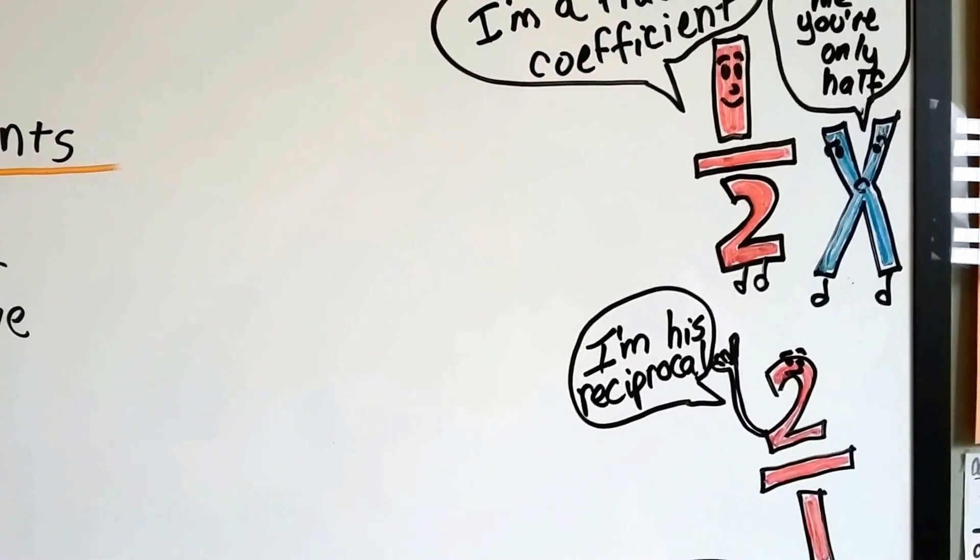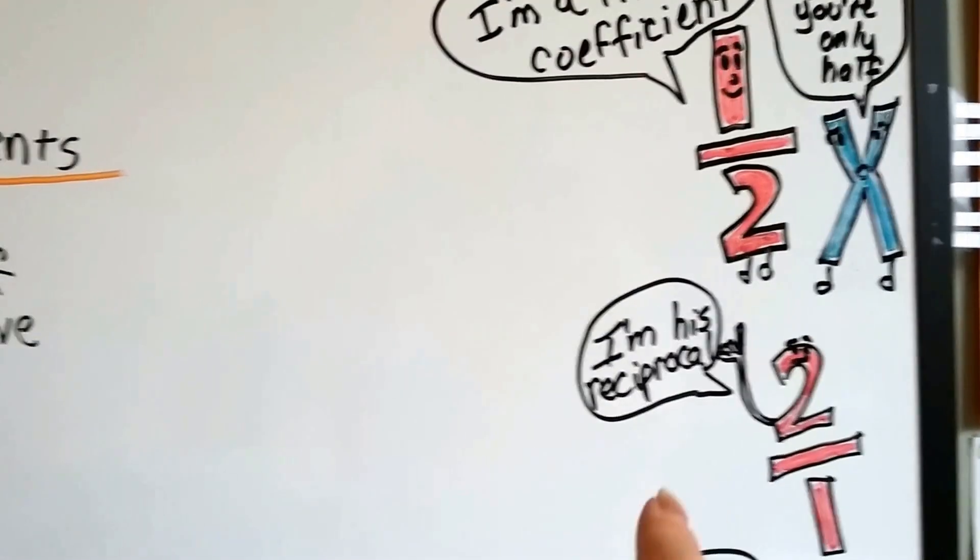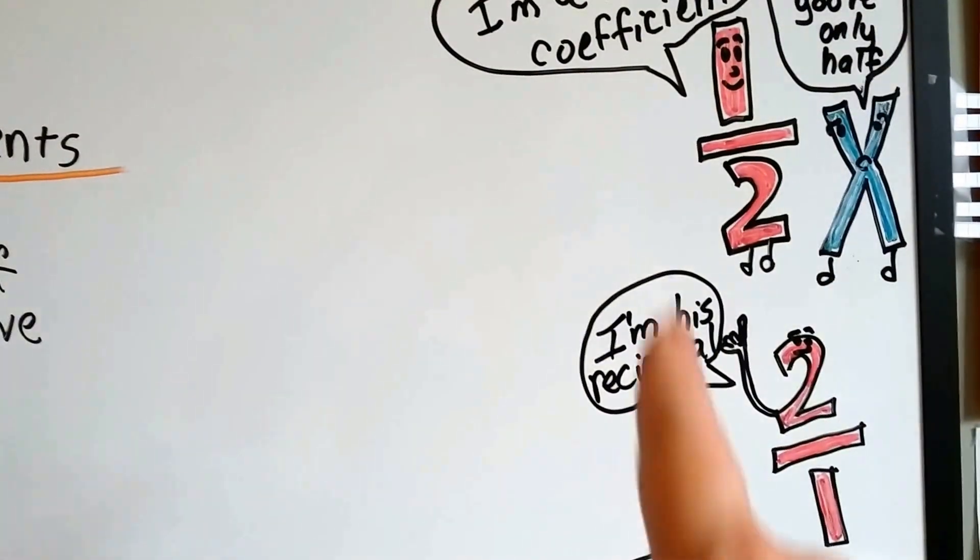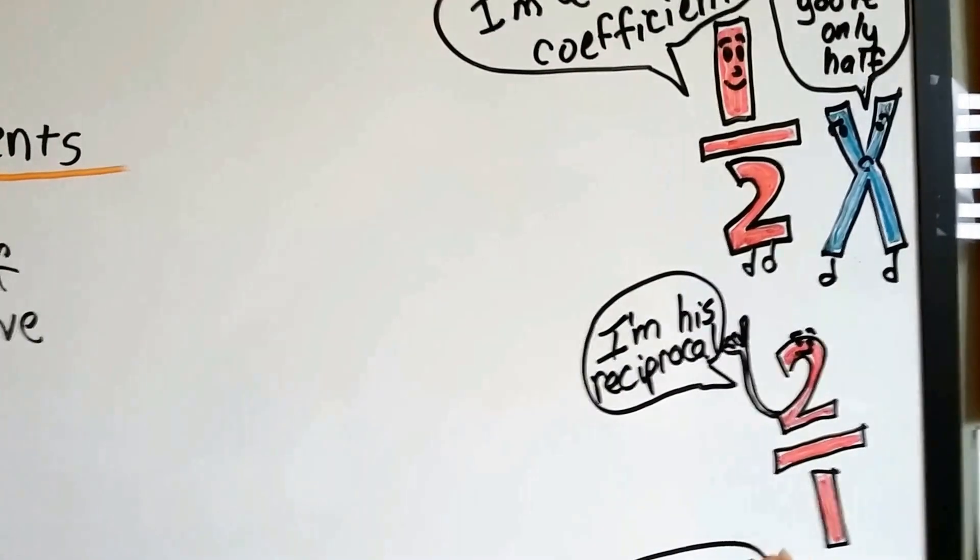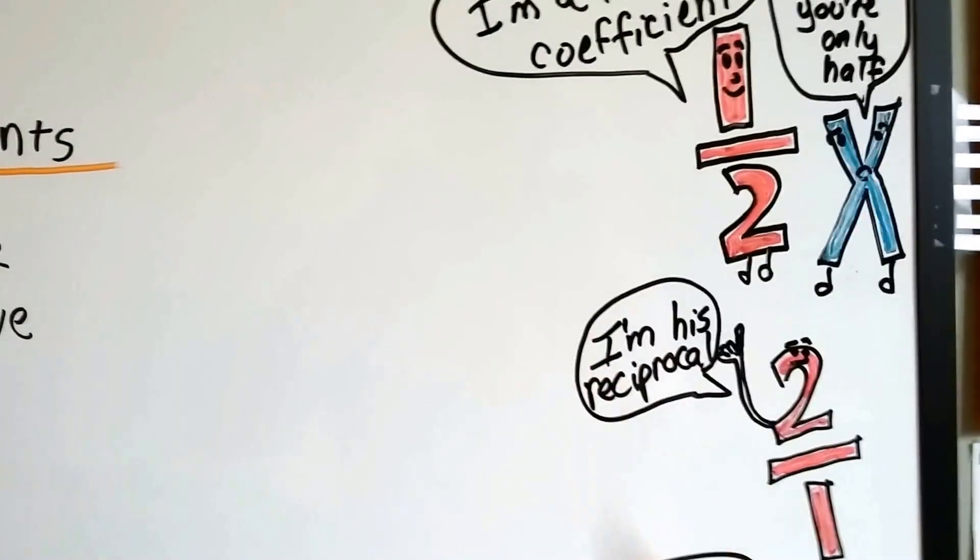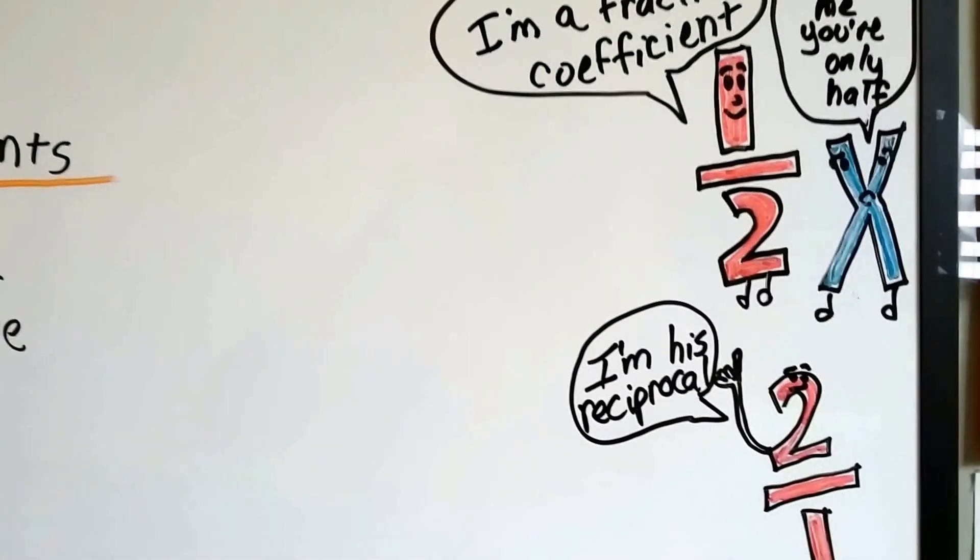And, if we flip him upside-down, we have his reciprocal. See? The one was the numerator, now the one is the denominator. We turned him upside-down, didn't we? That's his reciprocal.